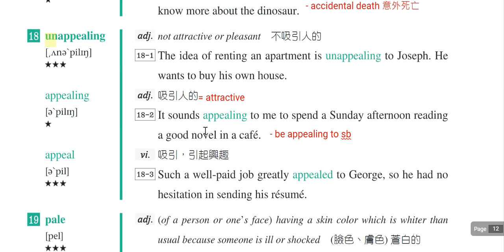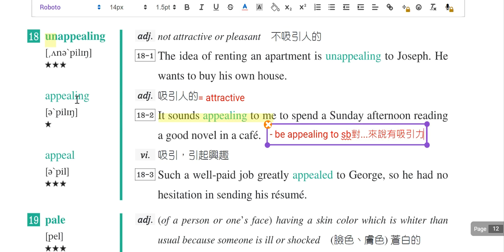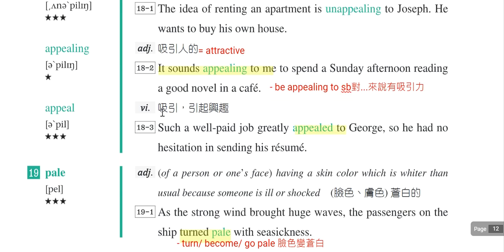Be appealing to somebody，对谁来说很有吸引力。动词是去掉ing变成appeal，表示吸引。例句：Such a well-paid job greatly appeals to George。这个appeal的用法要注意，它是不及物动词，所以搭配appeal to somebody，等于及物动词attract somebody。